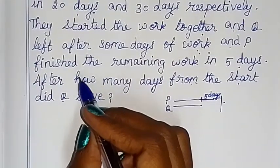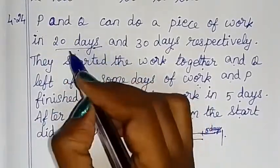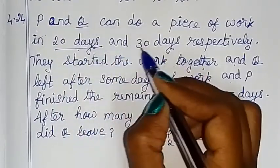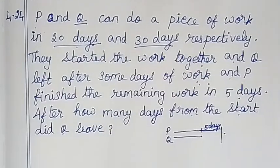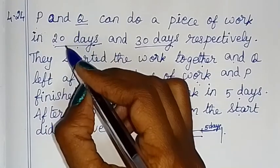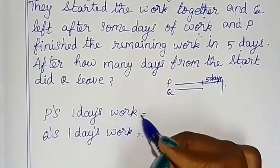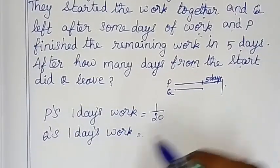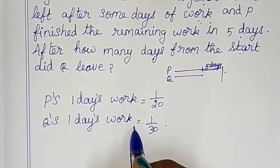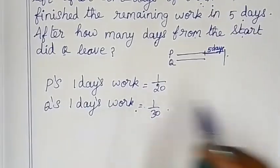So I am going to find out. P is working for 20 days, so P's one day work is 1/20. Q completes the work in 30 days, so Q's one day work is 1/30.